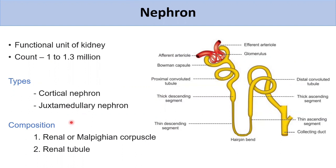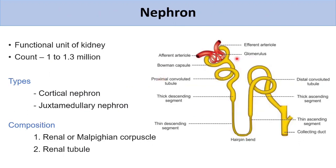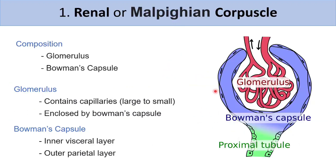Next, the composition of the nephron. The nephron is made up of the renal corpuscle, also called the Malpighian capsule, plus the renal tubule. Together these two areas form one nephron.